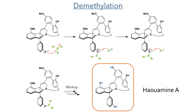Boron tribromide was then used to complete the synthesis. This reacted with the methyl ethers present on the molecule and unmasked the other phenol rings, completing the total synthesis of howamine A.